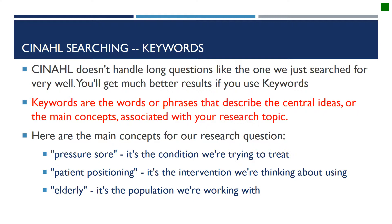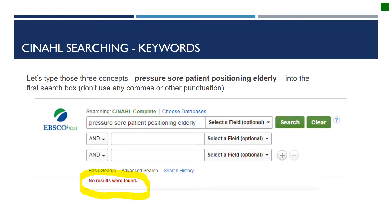You'll get much better results if you use keywords. Keywords are the words or phrases that describe the central ideas or the main concepts associated with your research topic. Here are the main concepts for our research question: pressure sore — the condition we're trying to treat; patient positioning — the intervention we are thinking about using; and elderly — the population that we're working with.